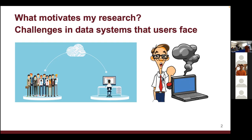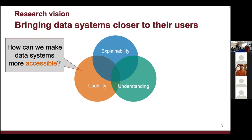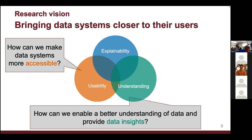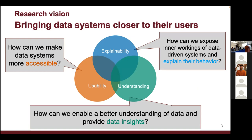These drive my research in three broad overlapping pillars: first, usability — how to make data systems more accessible; second, understanding — how to enable users to understand the data and system; and third, explainability — how to expose the inner workings of data systems and explain their behavior, especially when something goes wrong.